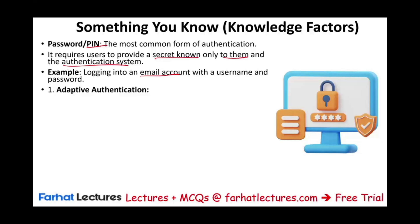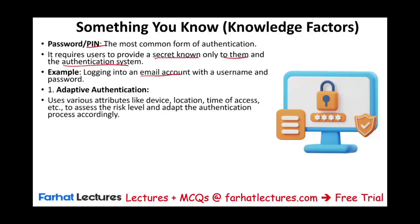We also have what's called adaptive authentication. In addition to the password, we can use other attributes like device, location, and time of access. For example, if you're not logging in from a certain device, you are out. If you're not logging in from a certain location, you are out. If you're not logging in during a certain time window, you are out. This assesses the risk level and adapts the authentication process accordingly, adding other attributes to make sure it's really you.